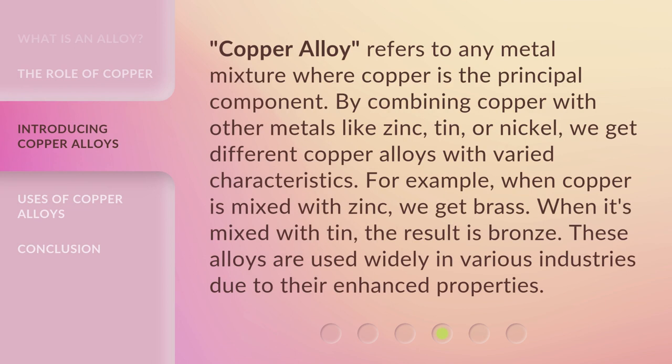Copper alloy refers to any metal mixture where copper is the principal component. By combining copper with other metals like zinc, tin, or nickel, we get different copper alloys with varied characteristics. For example, when copper is mixed with zinc, we get brass. When it's mixed with tin, the result is bronze. These alloys are used widely in various industries due to their enhanced properties.